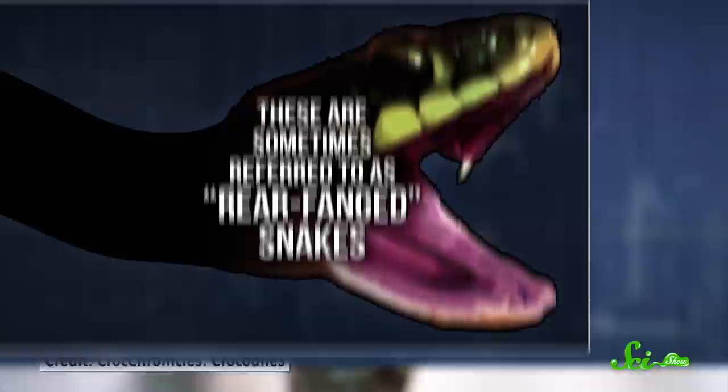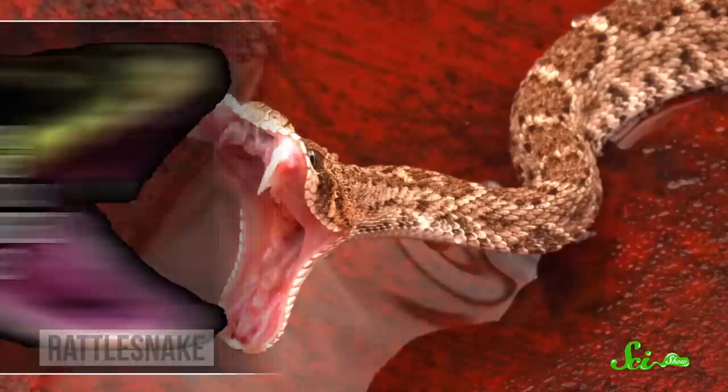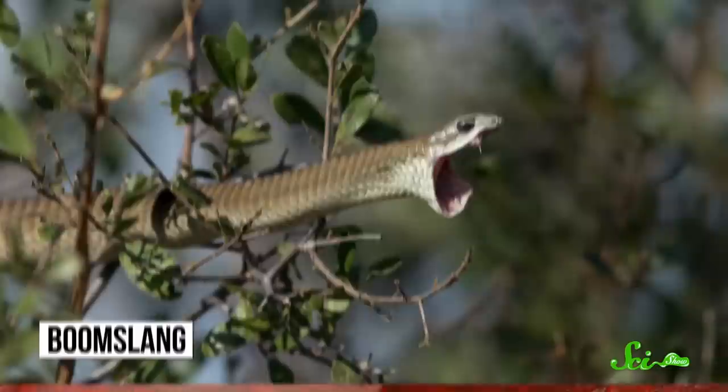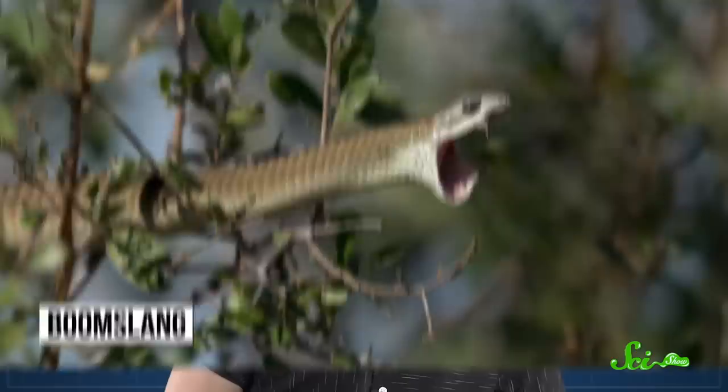These are sometimes referred to as rear-fanged snakes, because unlike rattlesnakes or cobras, which pump venom forcefully through hollow fangs in the front of their mouths, colubrid fangs sit further back in the jaw and deliver venom along open grooves. And they have to kind of chew on their prey a bit to get the venom moving.